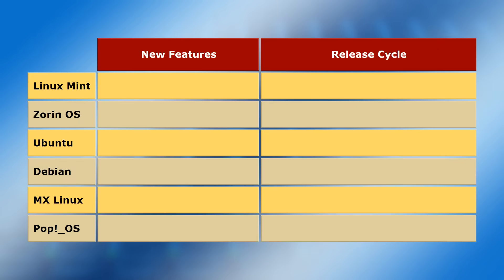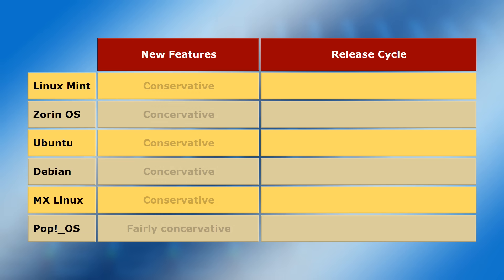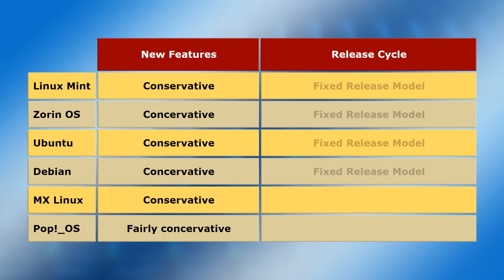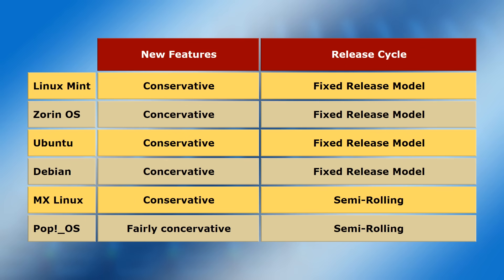Many factors can be considered when choosing a Linux distro, including how rapidly it embraces new Linux developments and whether it's a rolling release or releases fixed new versions. All of our distros are conservative when it comes to features. The first four have a fixed release cycle, whilst MX Linux and PopOS are semi-rolling, meaning they follow a fixed cycle but with a rolling release of some new features. A conservative distro with a fixed or largely fixed release cycle is what I recommend for your first distro, as it makes it less likely that you'll receive an update that stops things working and requires you to implement a fix.